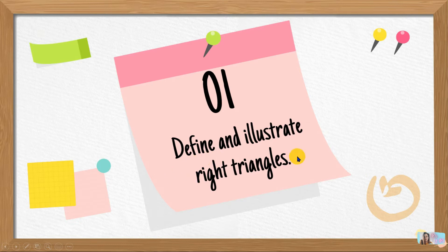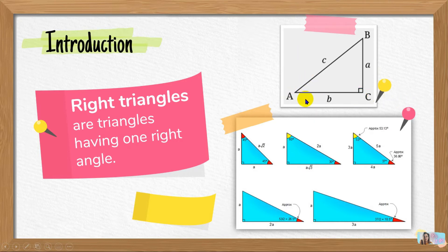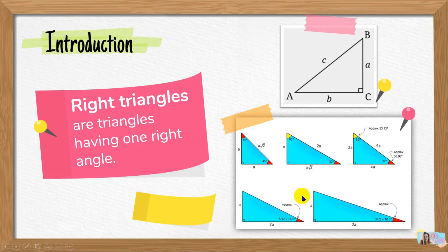Let's start with the definition and illustration of right triangles. I know you are all familiar with this type of triangle because we have already discussed this during our lesson about the introduction to triangles. Right triangles are triangles having one right angle. If we have a triangle having one right angle, we automatically call this a right triangle. So we have here triangle ABC and angle C is our right angle, so this triangle is considered to be a right triangle.